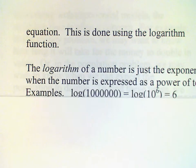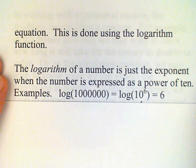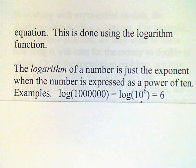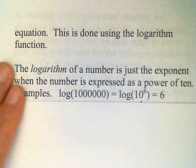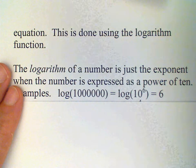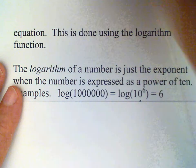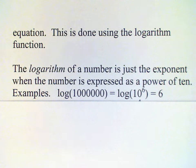Basically, the logarithm of a number is just the exponent when that number is expressed as a power of 10. So, for example, the logarithm of 1,000,000 is the same as the logarithm of 10 raised to the sixth power. And so there we see that the exponent is 6, and so the answer is 6.